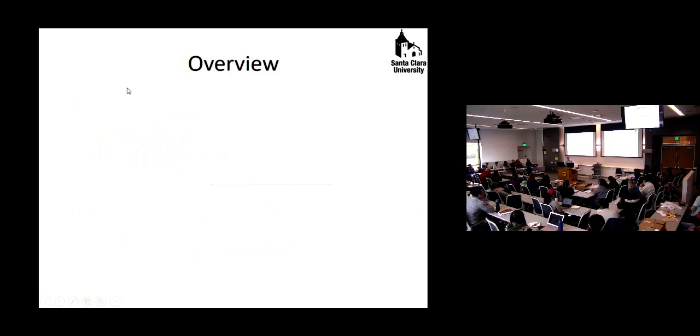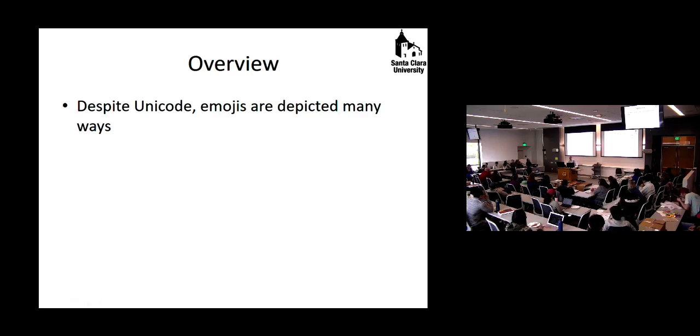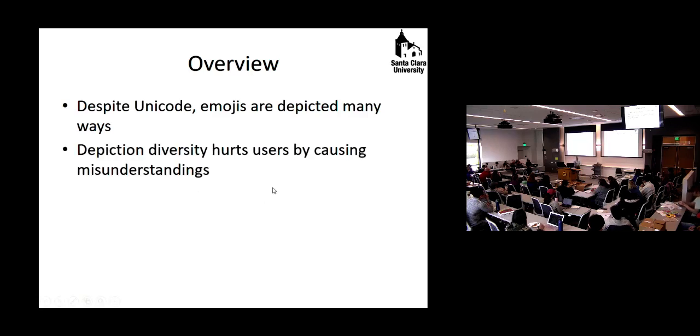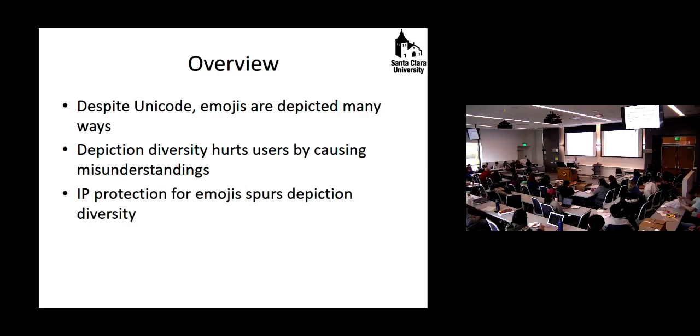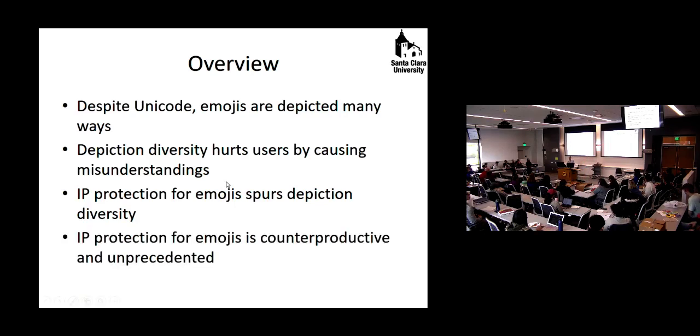Okay. So let me give you the quick overview of the talk. So despite the fact that Unicode has tried to standardize emojis, emojis are in fact depicted in multiple ways in different platforms. And this depiction diversity hurts users. It hurts all of us by causing misunderstandings. So it's actually creating misunderstandings that might not have otherwise exist. And the reason why we have depiction diversity, I hypothesize, is due to intellectual property protection. That emojis will be protected by intellectual property, and therefore that's going to drive some behavior that increases or exacerbates depiction diversity. And providing this IP protection is both counterproductive and unprincipled. It's unprincipled because we don't have good examples of other ways in which communication building blocks have been protected by IP, and it's counterproductive because it's actually adding misunderstandings where none need to exist.